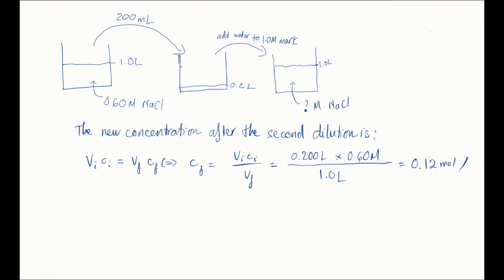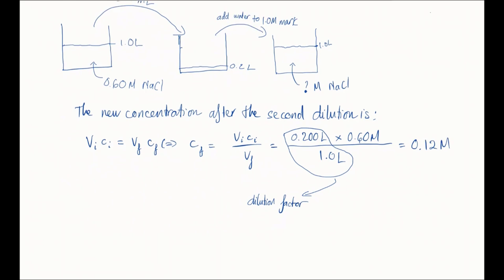Now notice the volume ratio. So you take 200 ml of a solution and dilute it to 1 liter. Now the dilution factor of that dilution is 0.2 to 1, or 1 to 5. It means that every time you take out 200 ml and dilute it to 1 liter, we are decreasing the concentration by 5 times.